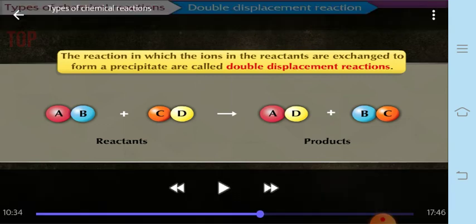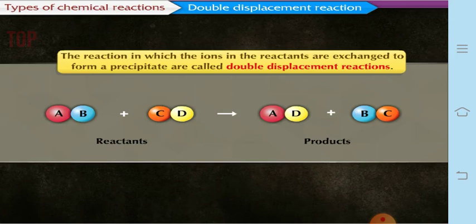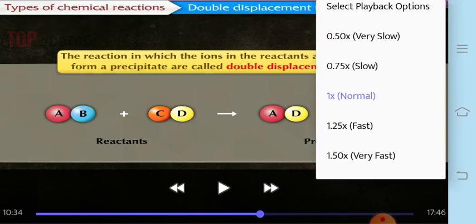Whenever a precipitate is formed in a reaction, remember that it is a type of double displacement reaction. By definition, a double displacement reaction is one in which the ions in the reactants are exchanged to form a precipitate. The general form is: AB + CD → AD + CB.